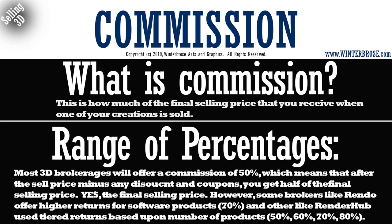Now we'll cover commissions. A commission is what portion of the sale you get. There's a range of percentages depending on the brokerage. Vendor sites have fees rather than commissions. For most brokerages, they keep 50% and you get 50% — so if you sell something for $20, you get $10. Also keep in mind that coupons or discounts customers have are applied first, then you get your 50% of the reduced amount. Some sites like Renderosity give 70% commission on software products. Renderhub has tiered returns of 50%, 60%, 70%, and 80% based on how many products you have in your store.